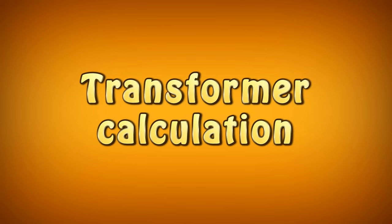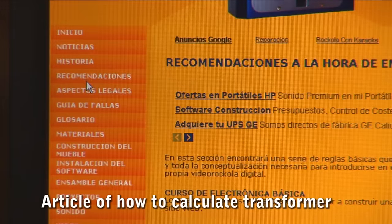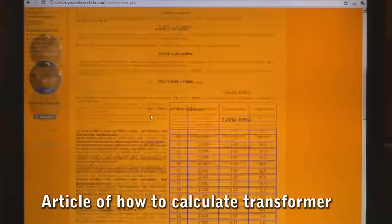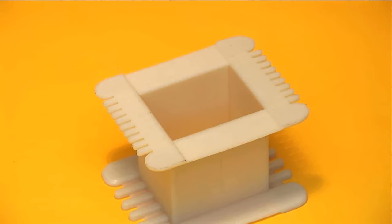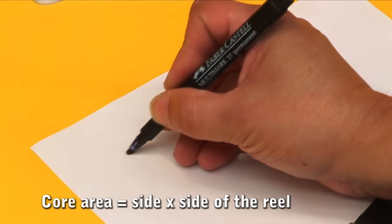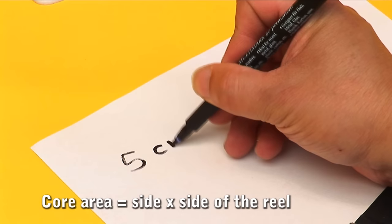Calculation of transformers. Before the construction of a transformer, you should study our article on how to calculate a transformer. To calculate the number of turns of wire, we take the core area as the product of multiplying side by side of the mold.